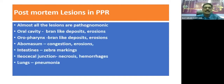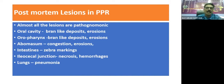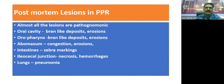Almost all lesions are pathognomonic. The oral cavity will show bran-like deposits and erosions. The oropharynx will show presence of bran-like deposits as well as erosions. Abomasum will show congestion, hemorrhages, and erosions. Intestines will show typical zebra markings. The ileocecal junction will show hemorrhages and necrosis. The lung will show pneumonia. These are the general post-mortem lesions present in PPR.